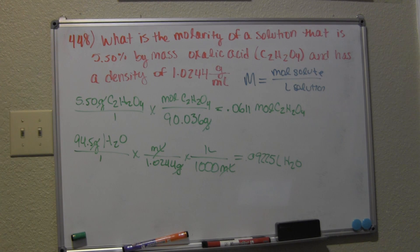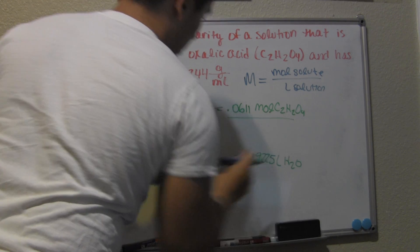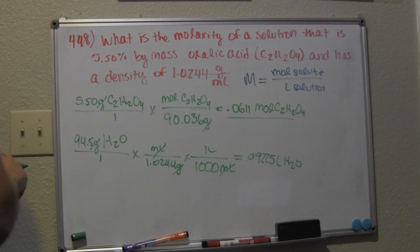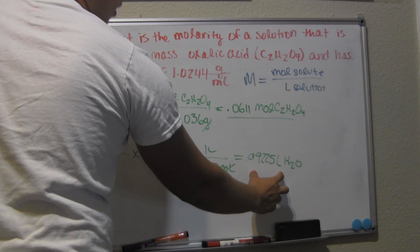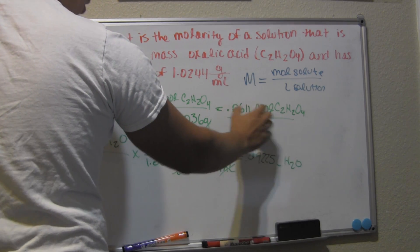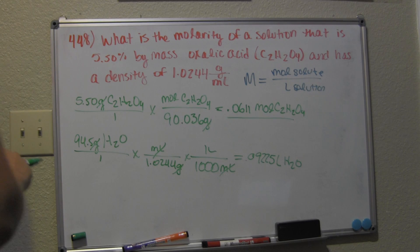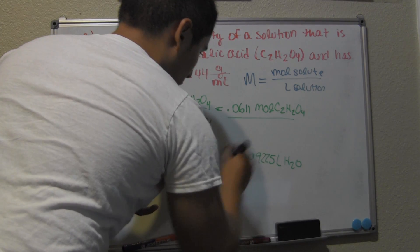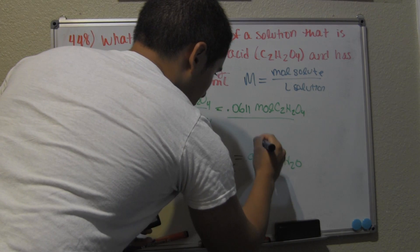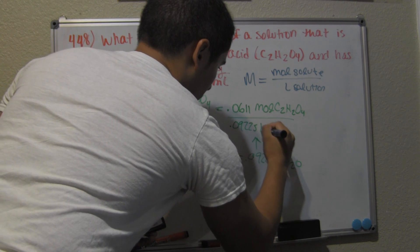The next step of our problem is to get this volume and put it under our moles so we're able to find the molarity. So 0.009225 liters of H₂O.